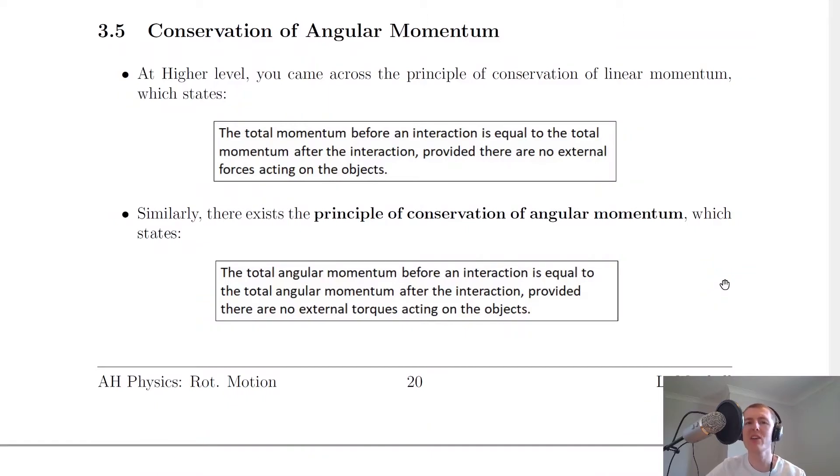The first thing to point out is that at higher level you came across the principle of conservation of linear momentum, also known as the law of conservation of linear momentum, which states that the total momentum before an interaction is equal to the total momentum after an interaction, provided there are no external forces acting on the objects.